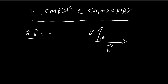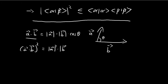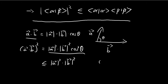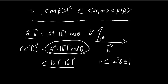So if I take the dot product of A and B, this is by definition equal to the magnitude of A times the magnitude of B times cosine theta. And then if I square both sides, this is equal to the magnitude of A squared times the magnitude of B squared times cosine squared theta. And I know that this expression is always smaller than or equal to the magnitude of A squared times the magnitude of B squared, because cosine squared theta is a number between 0 and 1.